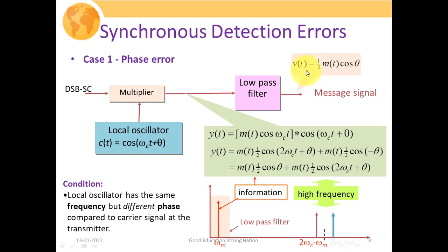The outcome V(t) = (1/2)·m(t)·cos(θ). Due to the cos(θ) factor, we get an attenuated and oscillatory outcome instead of the sole message signal m(t).